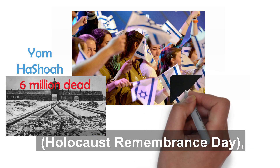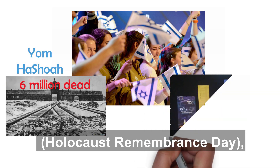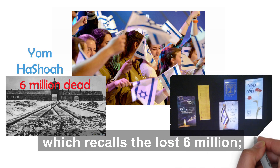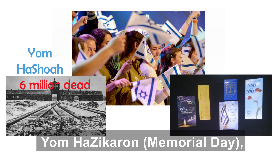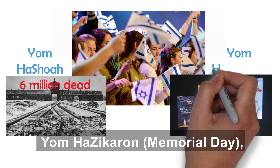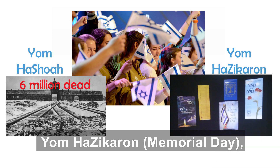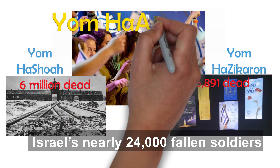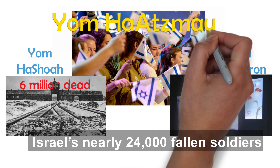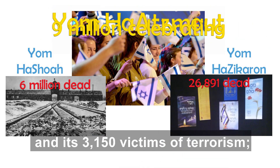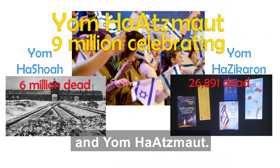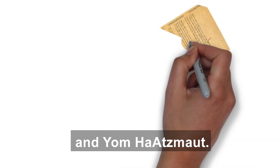Yom HaShoah, Holocaust Remembrance Day, the 27th of Nisan, recalls the lost six million. Yom HaZikaron, Memorial Day, the 4th of Ayar, honors Israel's nearly 24,000 fallen soldiers and its 3,150 victims of terrorism. And Yom Ha'atzma'ut.